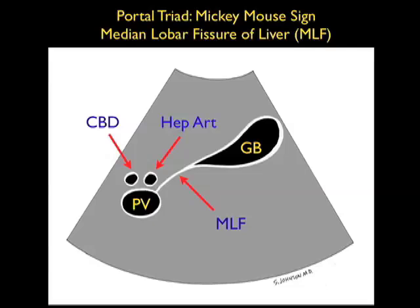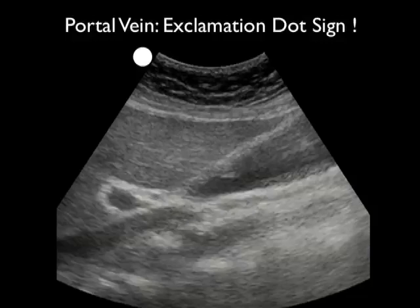Also, we see the common bile duct and hepatic artery on top of the portal vein, making up the structures of the portal triad.